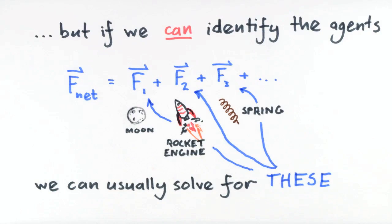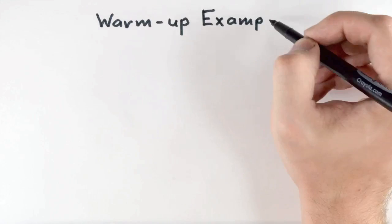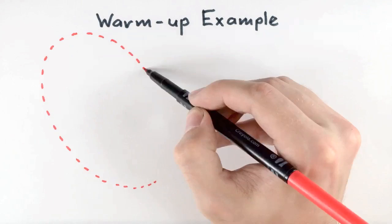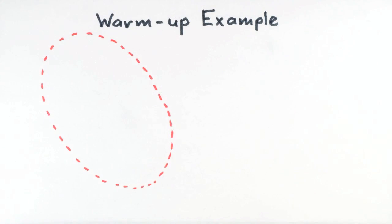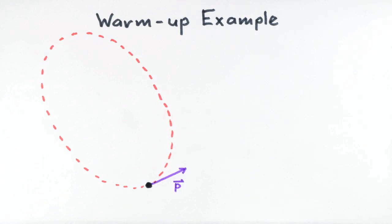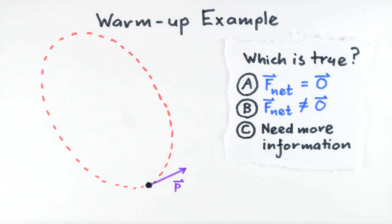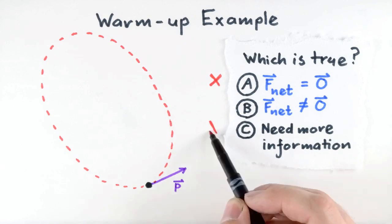Today we'll illustrate this process with some examples. As a warm-up, let's consider the motion of this presently unknown object, whose trajectory — whose path in space — we observe to be like this. The object is moving in the direction indicated by the arrows, and the position of the object is shown for a particular instant in time. At this instant, which of these statements about the net force is true? The correct answer is: the net force is non-zero.